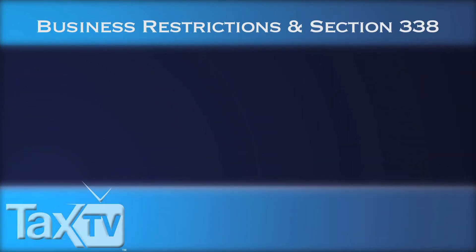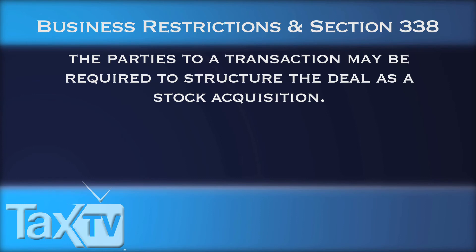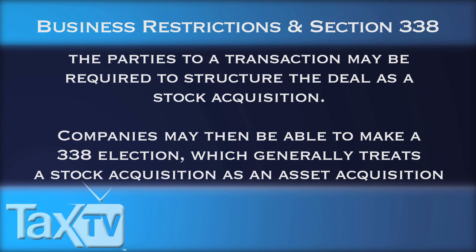Due to business restrictions, such as regulatory or licensing situations, the parties to a transaction may be required to structure the deal as a stock acquisition. But the companies may agree to the economics of an asset transaction if the stock acquisition is eligible under Section 338, which treats the acquisition as an asset acquisition. If the 338 election is made, the assets inside the corporation get a step-up in basis and the benefits of a higher basis for depreciation and amortization.